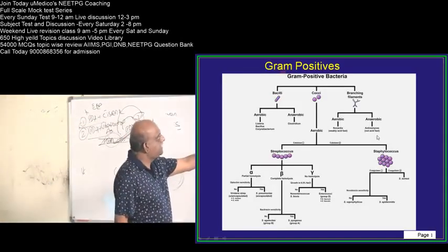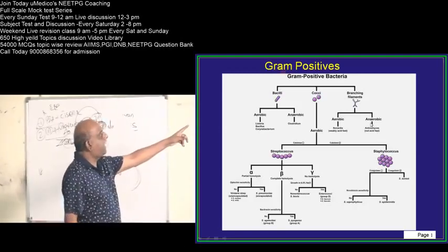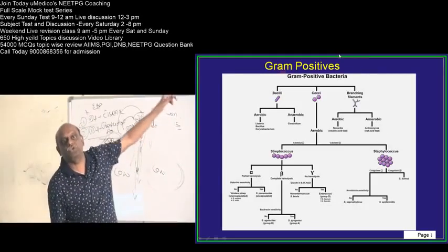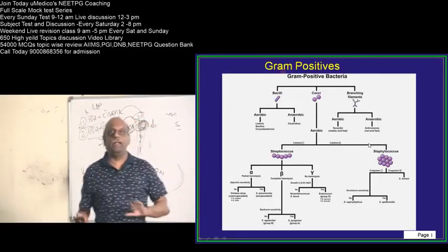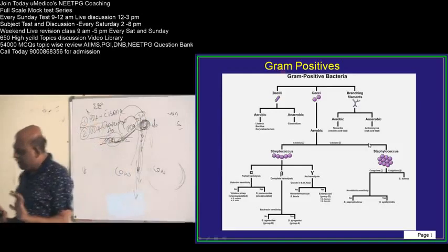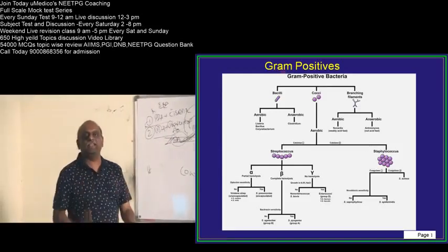Whereas, if you look at anaerobic branching filament, which is gram positive. Please don't forget, actinomyces. Until this, the story is very easy.